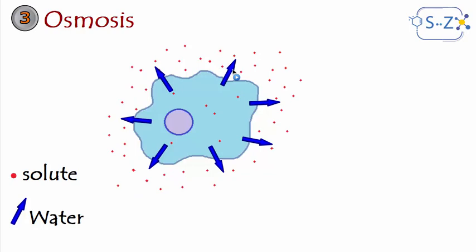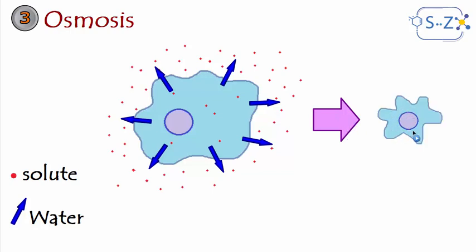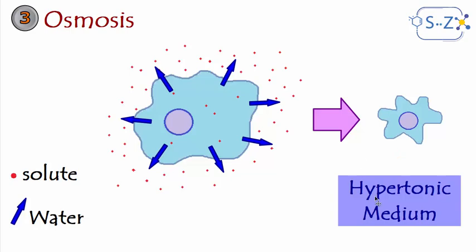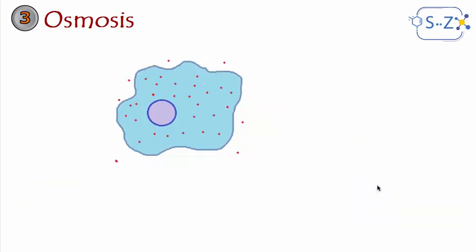We know from previous classes that to dilute a solution and decrease the concentration of solute, we increase the amount of solvent — in this case, water. That's why the water inside the cell will get out of the cell, causing the cell to shrink. This case is called a hypertonic medium — the cell is in a hypertonic medium where there is a high concentration of solute around the cell. The second case: let's say the concentration of solute inside the cell is much higher than outside.